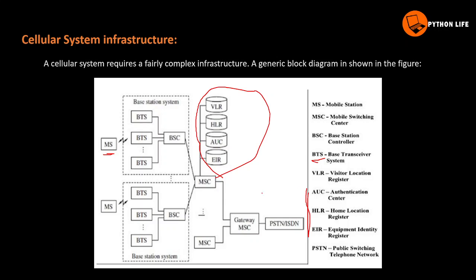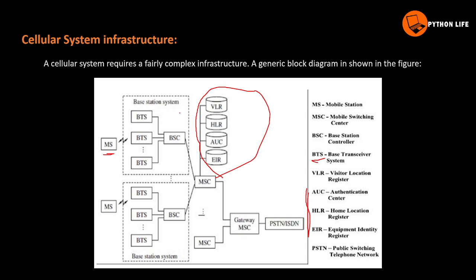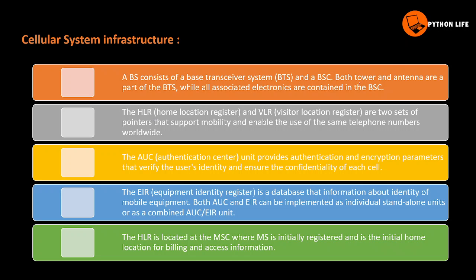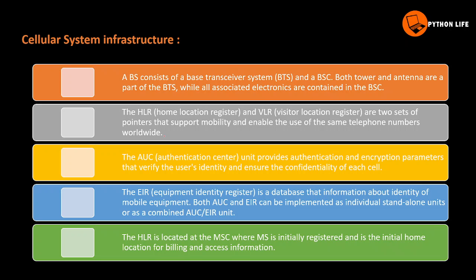From the gateway MSC, the connection goes to PSTN or ISDN. The destination is the mobile system — if we get a call, we can receive it through this signal path. BS consists of BTS (base transceiver system) and BSC (base station controller). Both tower and antenna are part of the BTS, while all associated electronics are contained in the BSC.